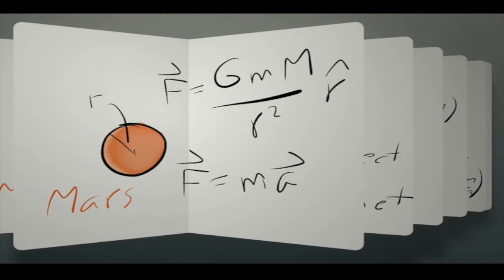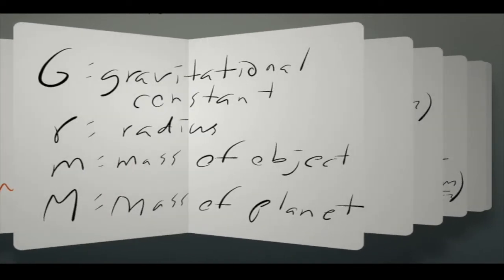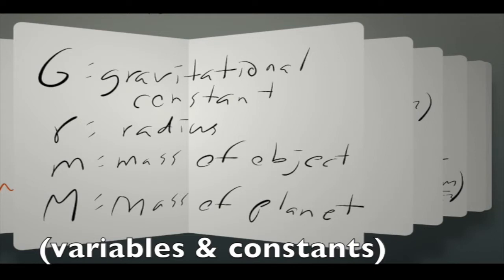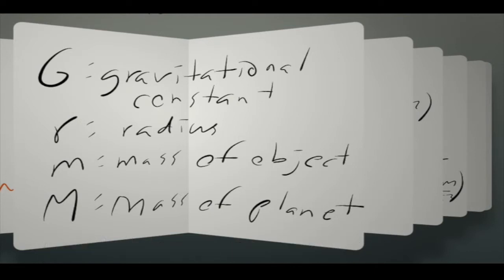Both the top equation and the lower equation have force so I'm going to set those two equations equal to each other. Just to go over the different variables capital G is the gravitational constant, r is the radius of the planet, m is the mass of an object on the surface of a planet, and capital M is the mass of the planet.